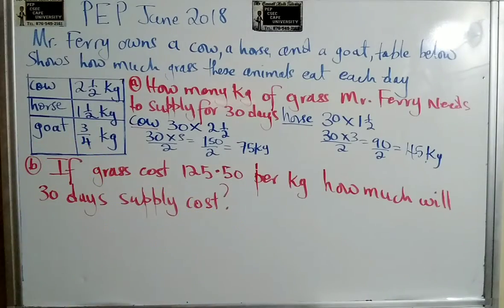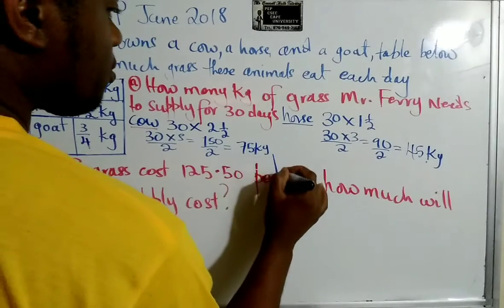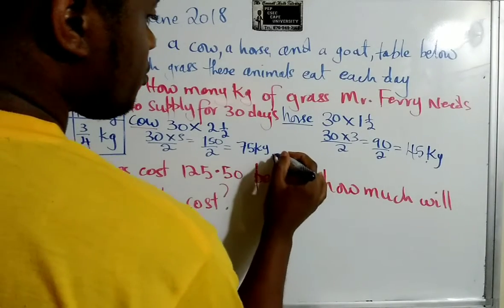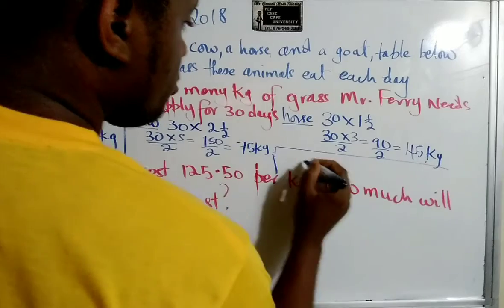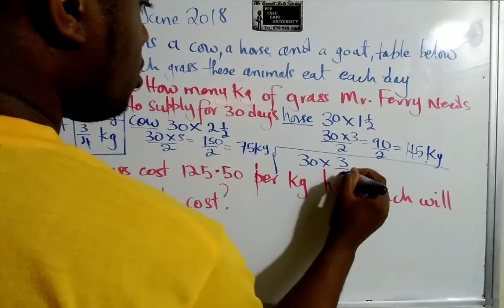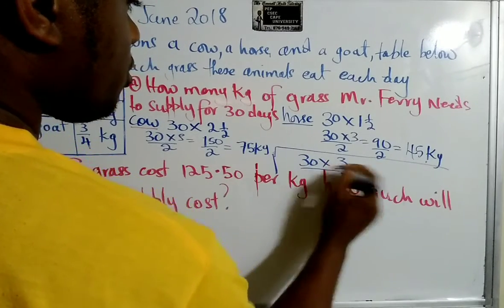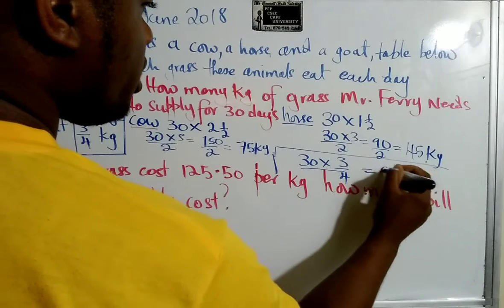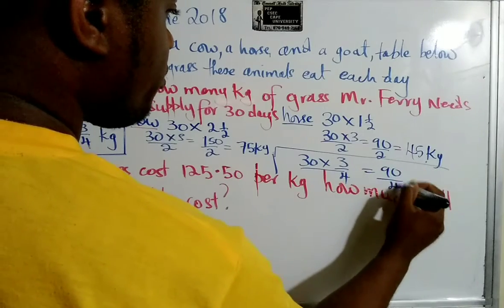And now the goat is going to eat three quarters per day for 30 days. So that would make it 30 times three quarters, which would be 90 divided by four.